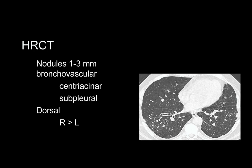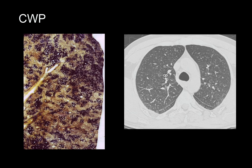HRCT is more sensitive and better characterizes the parenchymal changes in silicosis. Silicosis is centered on pulmonary lymphatics; thus silicotic nodules are centered along the bronchovascular bundles, the centriacinar portion of the lobule, and in the subpleural lung where the nodules form pseudoplaques. Nodules are more profuse in the dorsal aspect of the lung and tend to be more profuse in the right upper lung compared to the similar region on the left. Coal is less fibrogenic than silica; the coal macule is centered on the respiratory bronchiole. Coal is also removed by lymphatics, as seen by the black pleural line and the black line along the major airways on HRCT, along with numerous centriacinar nodules and slight thickening of the major fissure.